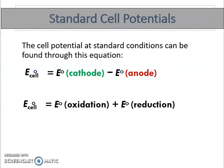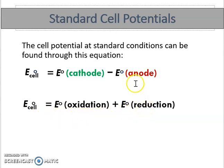The standard cell potential is the potential difference between the cathode and the anode at standard conditions. There are two formulas to calculate the standard cell potential. The first formula is: E⁰cell = E⁰cathode − E⁰anode. The second formula is: E⁰cell = E⁰oxidation + E⁰reduction. You can choose either one.